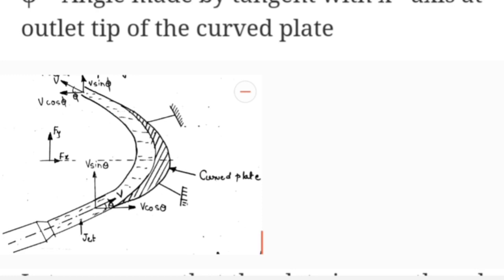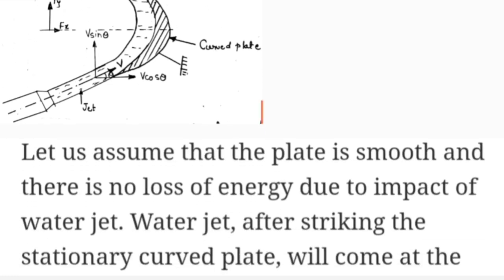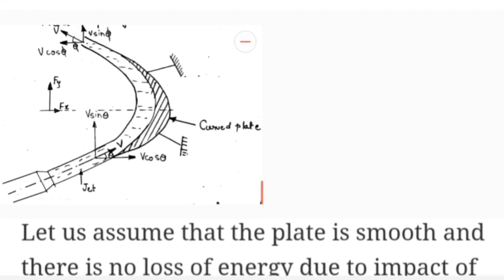We will derive equations for the force exerted in the direction of the jet and perpendicular to it. We assume that the inlet and outlet velocities are equal in magnitude, since the curved plate is smooth and there is no loss of energy as the jet moves along the curved plate.